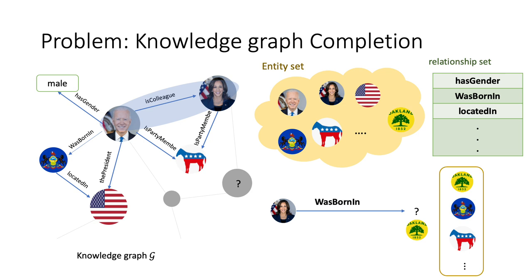The head entity and tail entities construct the entity set. The relationship constructs the relationship set. Based on the incomplete knowledge graph, we hope to infer new nodes to complete the knowledge graph. For example, we hope to predict where Harris was born in.